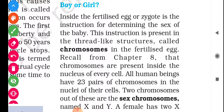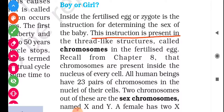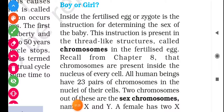Inside the fertilized egg, or zygote, is the instruction for determining the sex of the baby — whether he is a boy or she is a girl. This instruction is present in the thread-like structures called chromosomes in the fertilized egg. Chromosomes are the thread-like structures which contain the hereditary or deterministic information related to the sex of the baby. Recall from chapter 8 that chromosomes are present inside the nucleus of every cell.